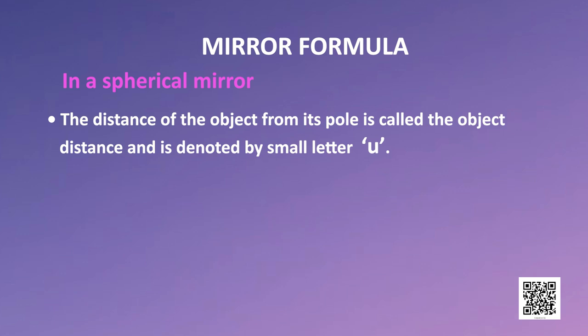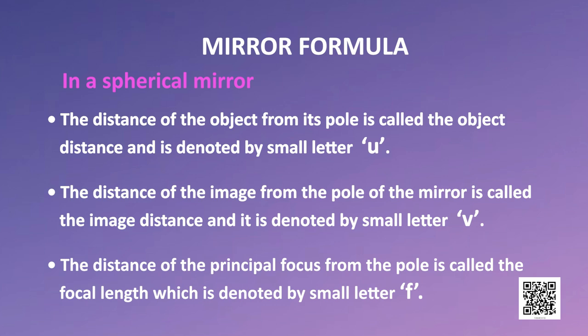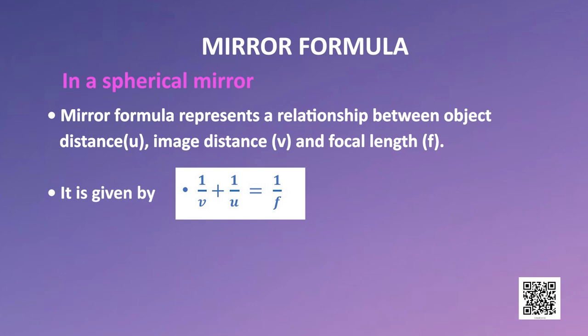Before we are introduced to the mirror formula, let us learn about certain basic terms and their symbols. In a spherical mirror, the distance of the object from its pole is called the object distance and is denoted by small letter u. The distance of the image from the pole of the mirror is called the image distance and is denoted by small letter v. The distance of the principal focus from the pole is called the focal length, denoted by small letter f. The mirror formula represents a relationship between object distance u, image distance v and focal length f. It is given by 1/v + 1/u = 1/f.